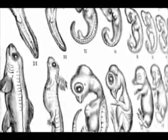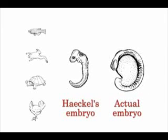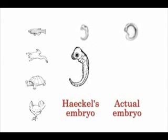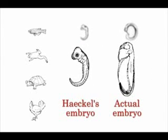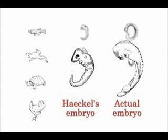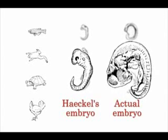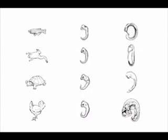The problem is that he faked his drawings. The early vertebrate embryos don't really look that similar at all. The problem with Haeckel's drawings wasn't just that they were inaccurate — they were actually false in many cases. The real damage was done when these drawings entered biology textbooks decades ago, and they've never really been taken out.